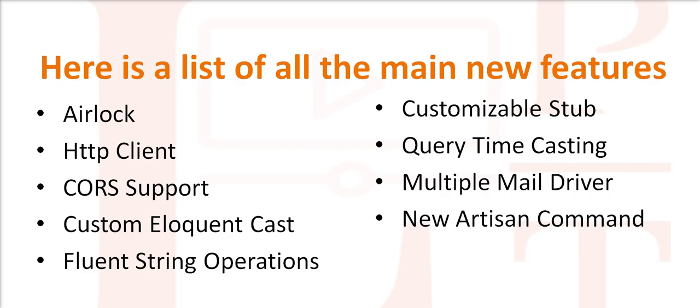multiple mail driver, and new Artisan command. These all features are available in Laravel 7. The first one is Airlock. Airlock is an official package for API authentication. It provides simple token-based API with token sync. Airlock also provides single page application authentication with CSRF protection. We will learn more about Airlock in the next tutorial.